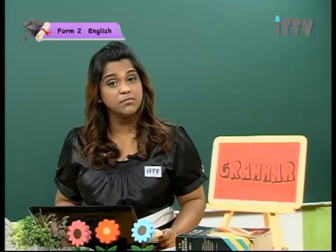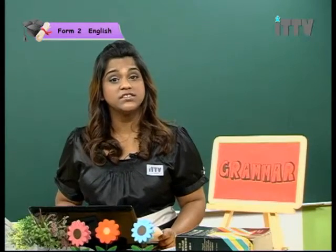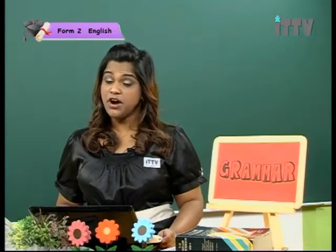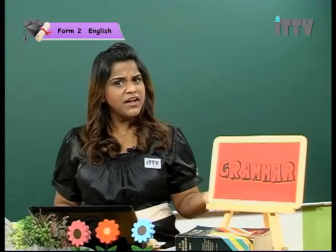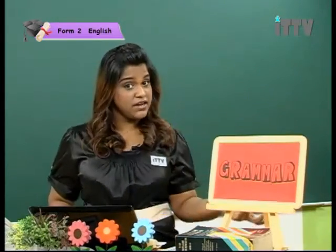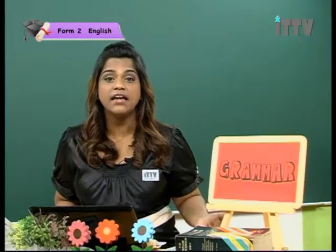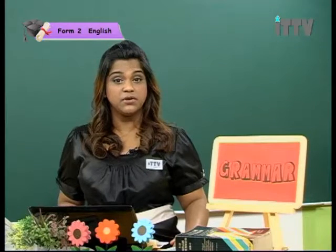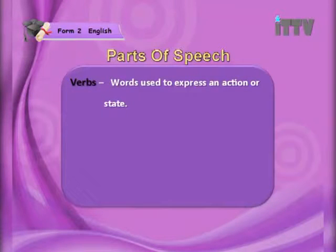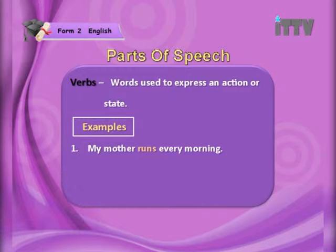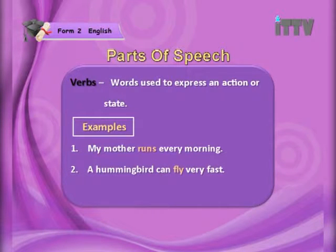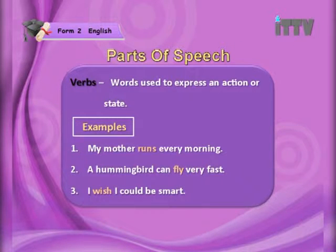Now, the next part of speech is the verb. The verb is the most important part of the sentence. A verb is primarily used to show an action — different types of actions like running, jogging, skipping, flying. Verbs are words used to express an action or a state. For example, my mother runs every morning. A hummingbird can fly very fast. I wish I could be smart.